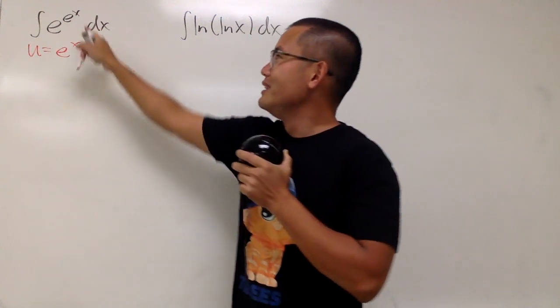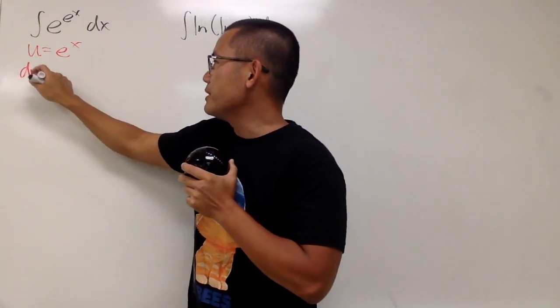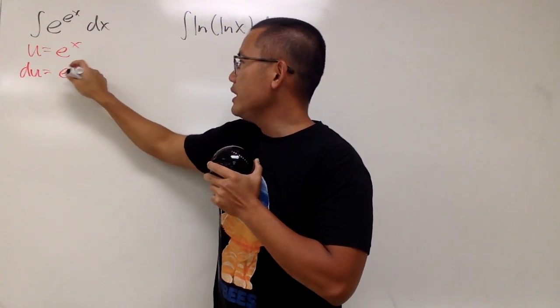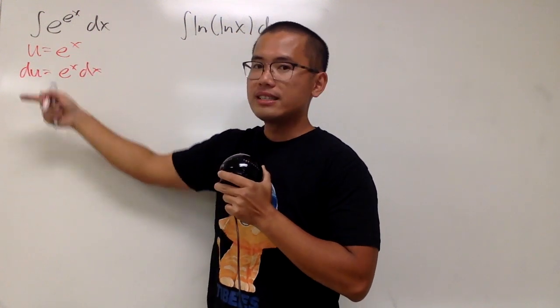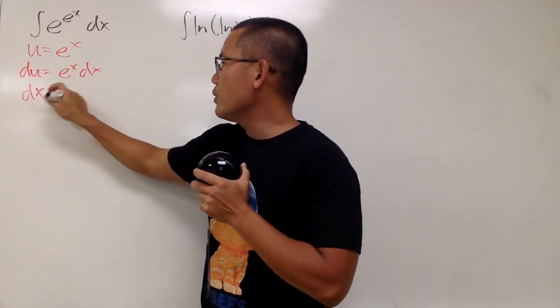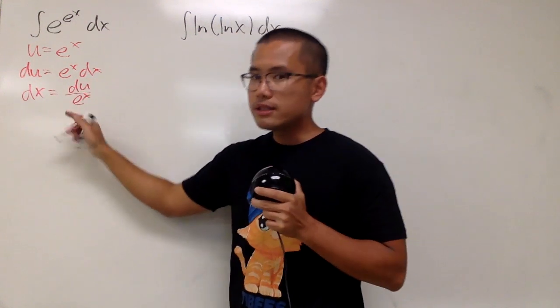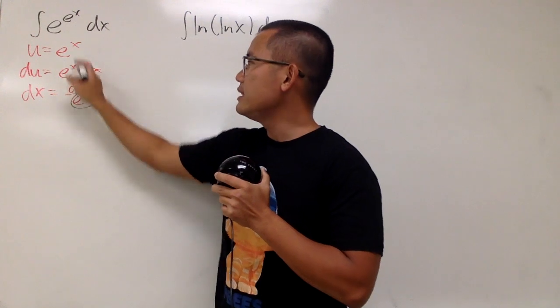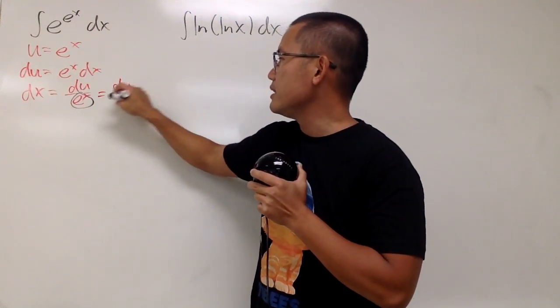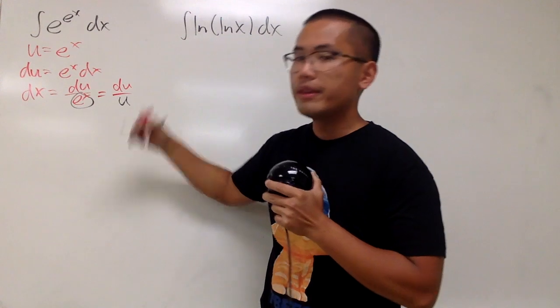Of course, let's go through the usual business. du is equal to e to the x dx, and let's divide this on both sides. So we get dx equals du over e to the x. And notice that e to the x is precisely our u, so this is just precisely du over u.